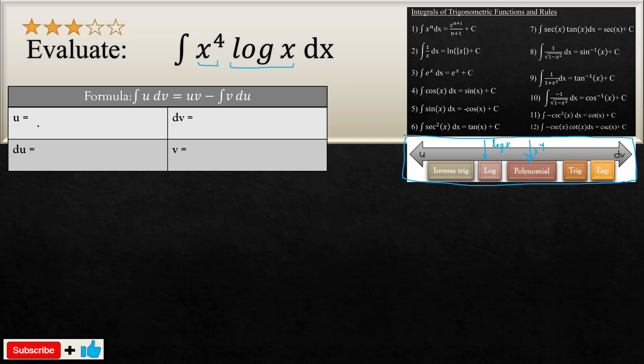Now, what do you do? You write your log as the U and you write X to the fourth as your DV. Now, once we did this, this is the hardest part to analyze what you're trying to do. After this, it's quite smooth sailing, so you shouldn't worry.